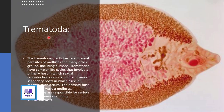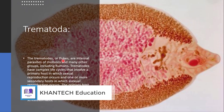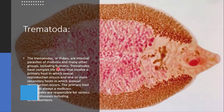Class Trematoda — flukes — are basically internal parasites of mollusks and many other groups, including human beings. Their life cycle is complex, involving both a primary host, in which sexual reproduction occurs, and a secondary host, in which asexual reproduction occurs.